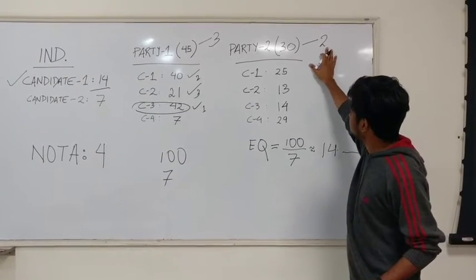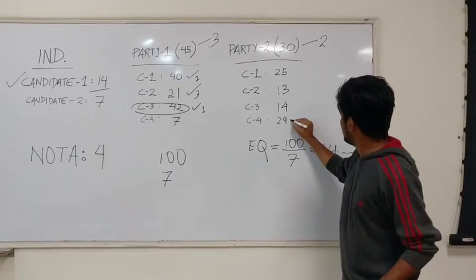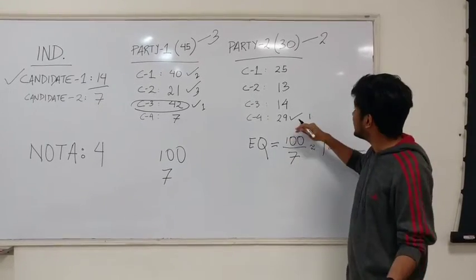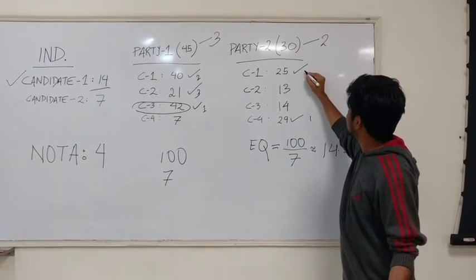For party 2, who are these two people? The first one is candidate 4 who's gotten 29 votes and then the next one is candidate 1 who's gotten 25.